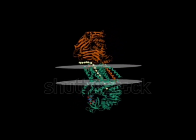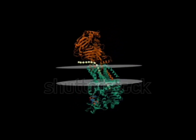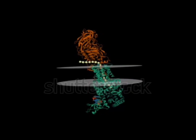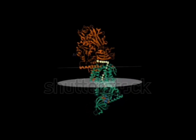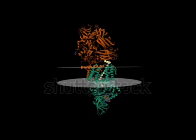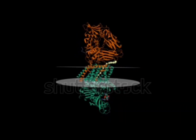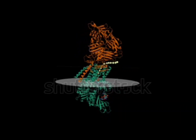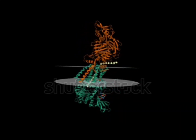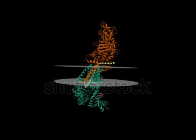Photosynthesis is crucial for life on Earth as it provides oxygen for respiration and is the foundation of the food chain, as plants are primary producers that convert light energy into chemical energy, which is then consumed by animals and other organisms.